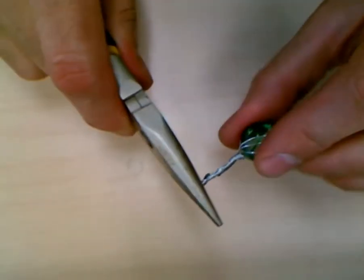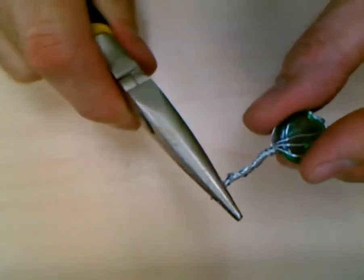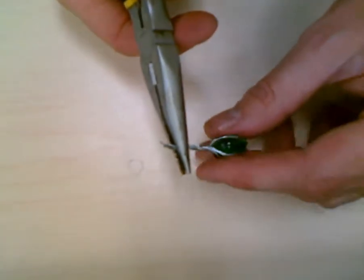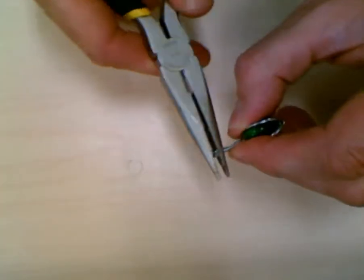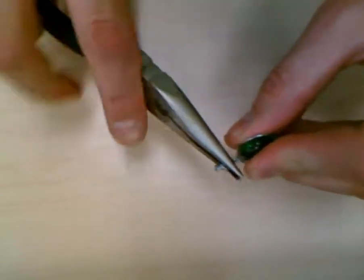We want to try not to have any sharp ends there, and then we'll twist this around to make a hook.